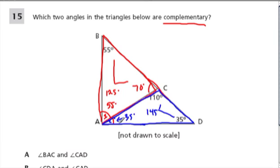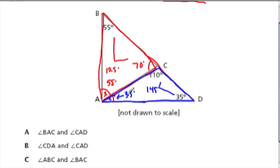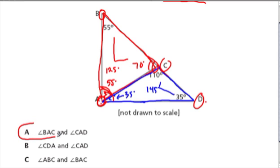Now look at our combinations — which one of these will add up to 90? These two angles add up to 90. The choices include B-A-C and C-A-D. C-A-D is this blue angle right here. Yes, 55 and 35 — that's 90 degrees. Choice A is the complementary pair.